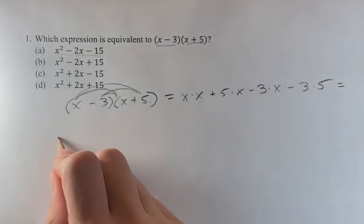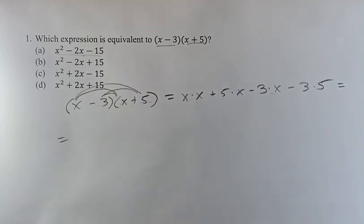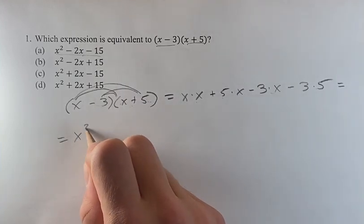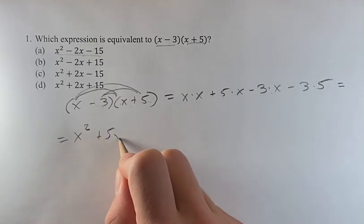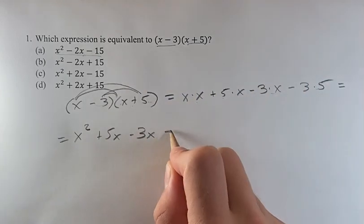And now we can multiply each of these four terms together. So x squared plus 5x minus 3x minus 15.